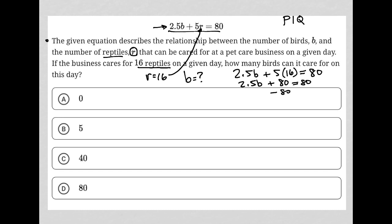And I subtract 80 from both sides here, and I'm left with 2.5b equals 0, and therefore b must equal 0 itself. So our correct answer here is choice A.